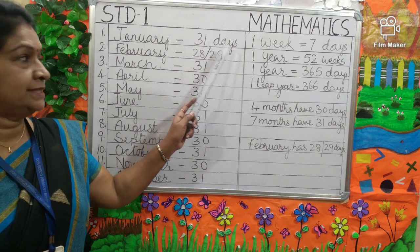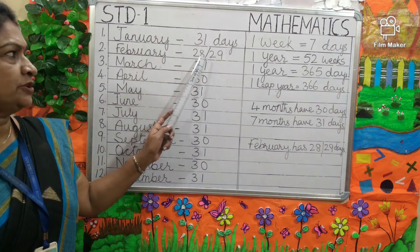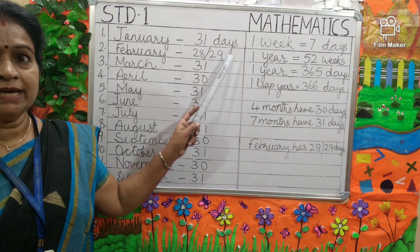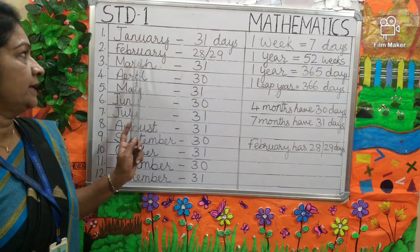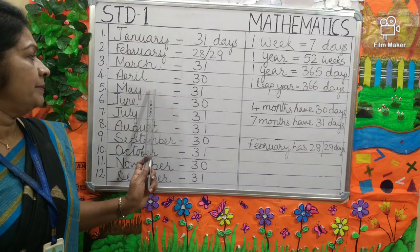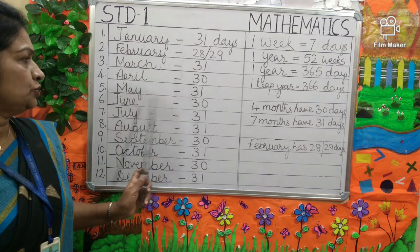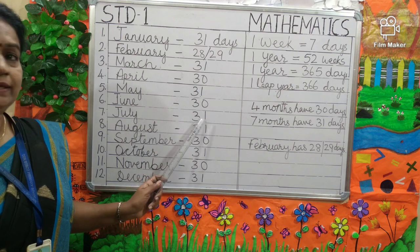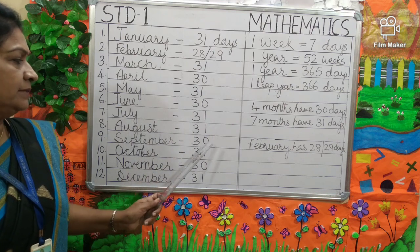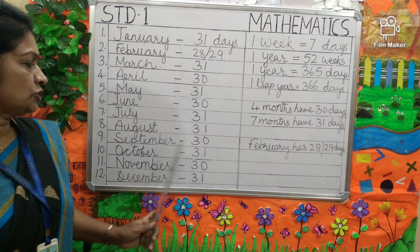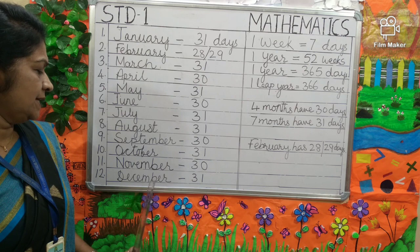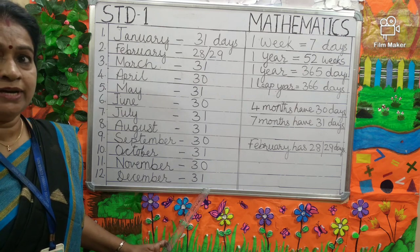January has 31 days. February has 28 or 29 days — in a leap year it will have 29 days. March 31 days, April 30 days, May 31 days, June 30 days, July 31 days, August 31 days, September 31 days, October 31 days, November 30 days, and December 31 days.